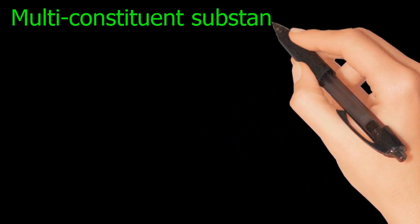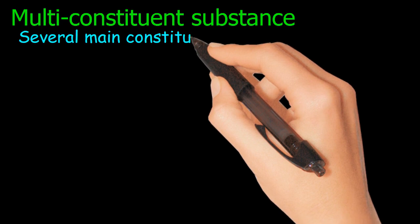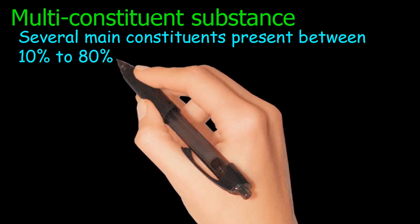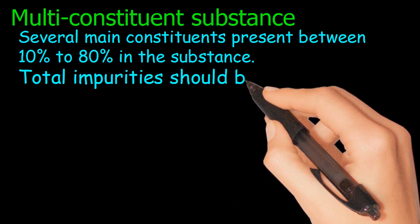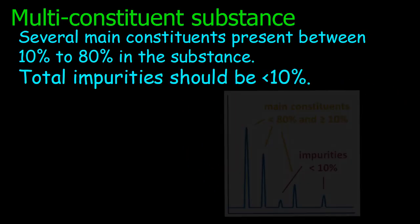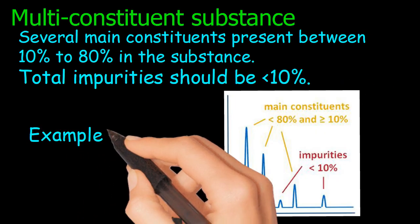Multi-constituent substance: several main constituents present between 10% to 80% in the substance. Total impurities should be less than 10%. Example: charcoal.